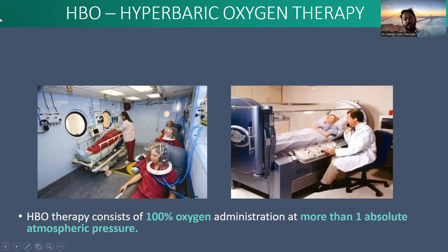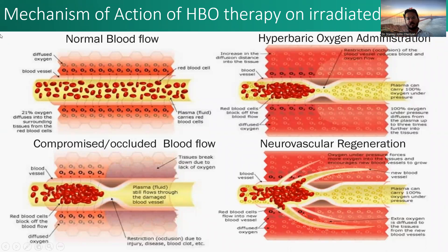Hyperbaric oxygen therapy is given to a patient to increase the oxygen that reaches his tissues. It consists of 100% oxygen administered at more than one absolute atmospheric pressure. This is given either in a monoplace or a multiplace unit. The picture on the right shows a monoplace unit — a single chamber where only one patient is treated. On the left side is a multiplace unit where multiple patients can be treated in a large room.